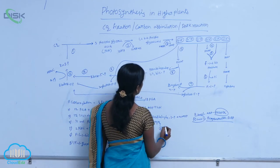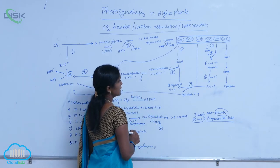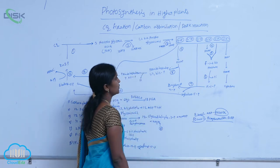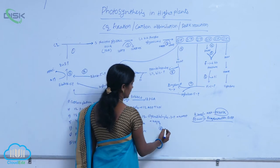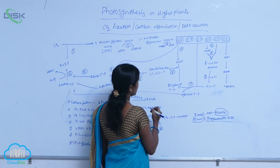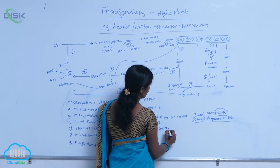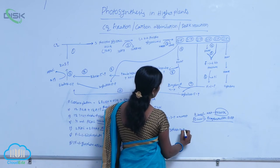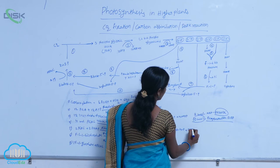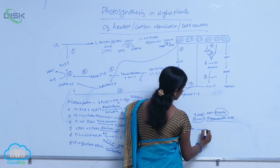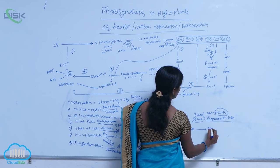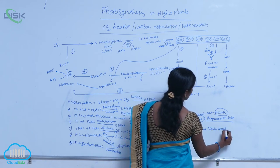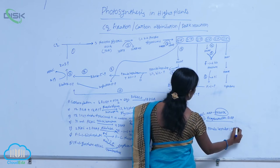Reaction 8 is the formation of pseudo-heptalose-1,7-bisphosphate. Here, the joining of 2 compounds — erythrose-4-phosphate and DHAP (dihydroxyacetone phosphate) — results in the production of pseudo-heptalose-1,7-bisphosphate. Erythrose-4-phosphate plus DHAP yields pseudo-heptalose-1,7-bisphosphate.